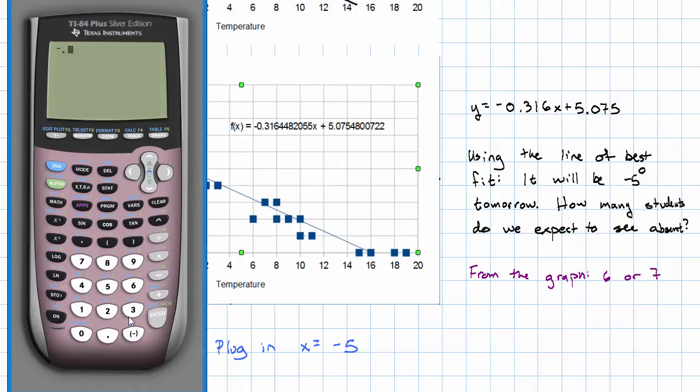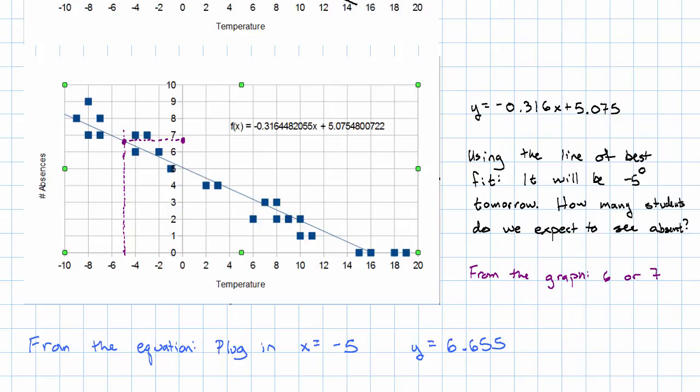Negative 0.316 times negative 5 plus 5.075. And we get y is 6.655. And so, again, we expect 6 or 7 students to be absent.